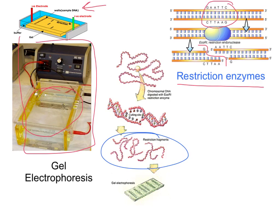That's our first step in gel electrophoresis — using restriction enzymes to cut the DNA into smaller pieces. Then once we've cut the DNA into smaller pieces, we place them into those wells at one end of the gel that the DNA will travel through.